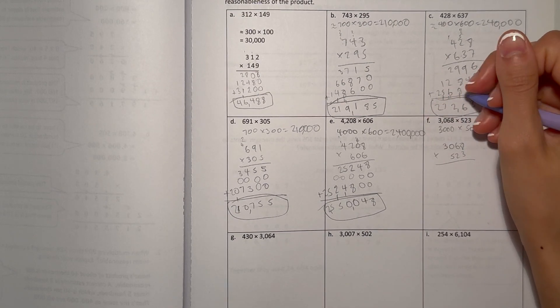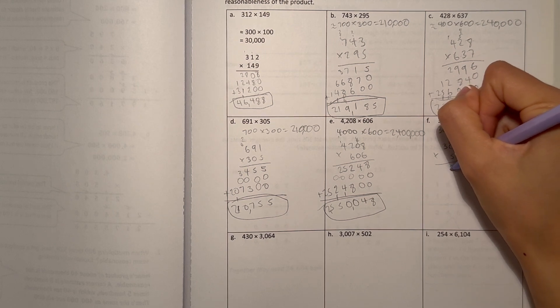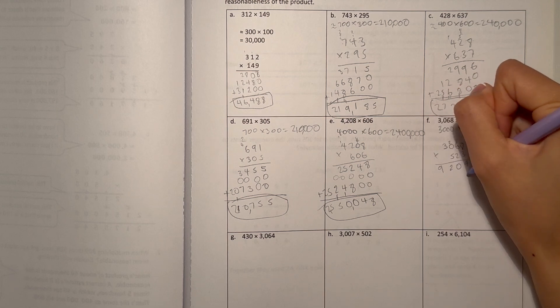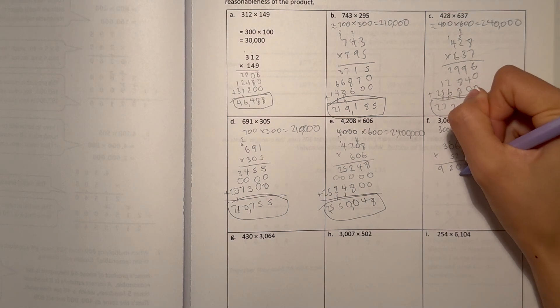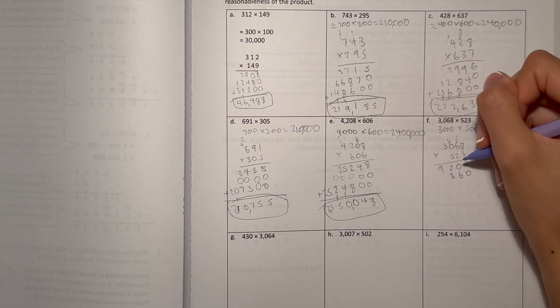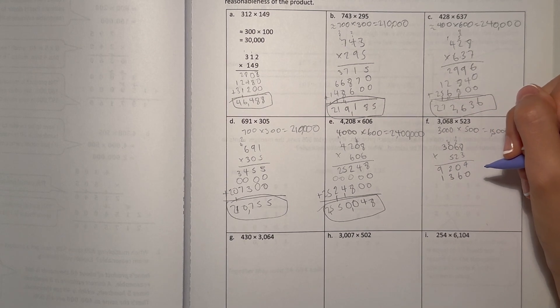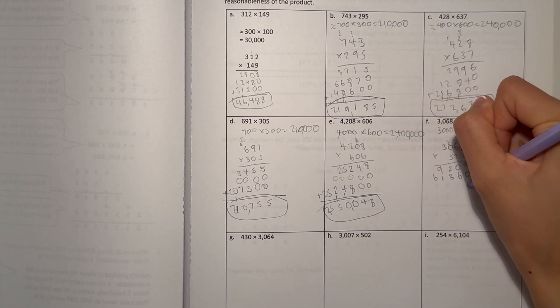Let's look at 3. 8 times 3 is 24. 6 times 3 is 18, plus 2 is 20. 0 times 3 is 0, plus 2 is 2. And 3 times 3 is 9. Add a 0. 2 times 8 is 16. 2 times 6 is 12, plus 1 is 13. 2 times 0 is 0, plus 1 is 1. And 2 times 3 is 6.